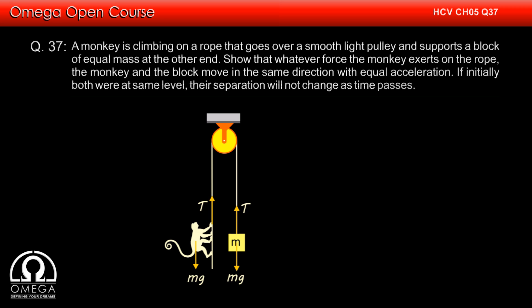Let the system be initially at rest. The gravitational force on the monkey is balanced by tension in the string. Since in ideal conditions, tension is same throughout the string, therefore the same tension acts on the block on the other side. This tension balances the gravitational force on the block.